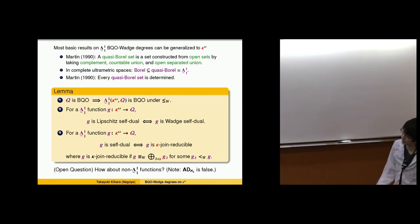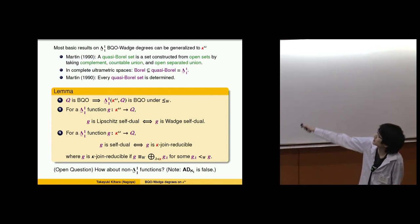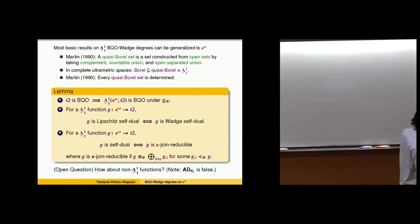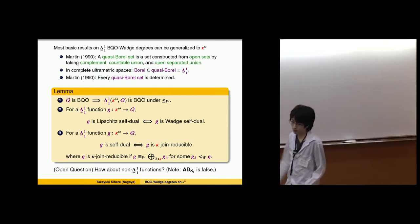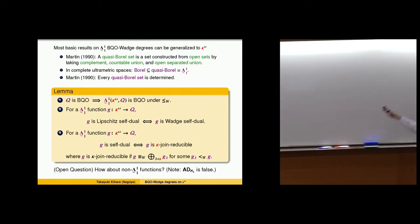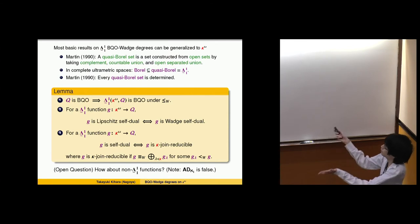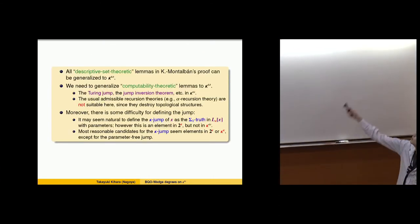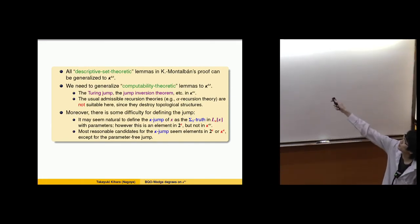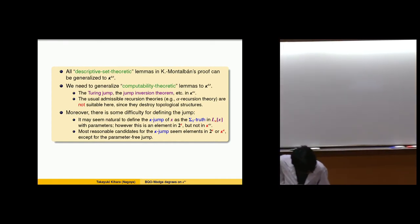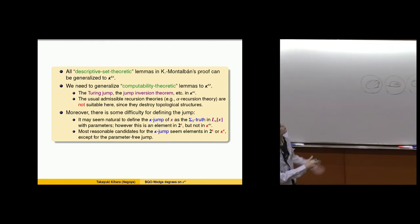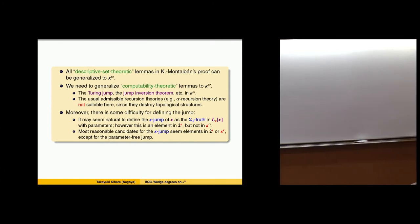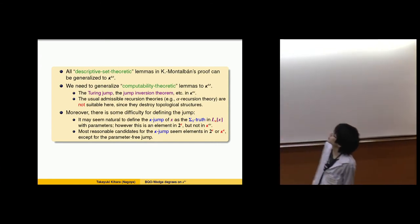If Q is BQO, then delta-1 functions from kappa-omega to Q are BQO under Wadge reducibility. We can also generalize self-duality and kappa-join reducibility to the kappa-omega setting. All descriptive set-theoretic lemmas can be generalized to kappa-omega. The problem is whether we can also generalize the computability-theoretic parts of the proof — for example, the Turing jump and jump inversion theorem in kappa-omega.